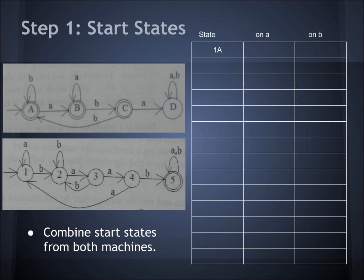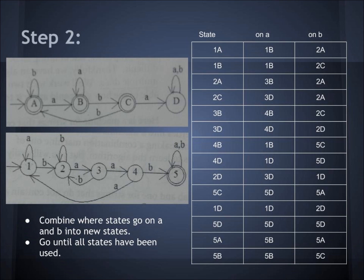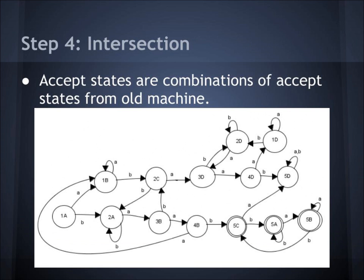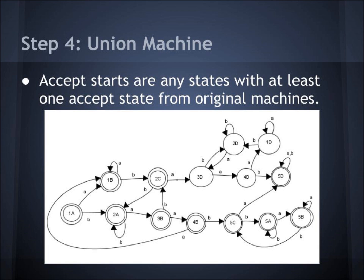Step 1: you make the start state — from these two machines it would be 1A. Step 2: you combine where the states go on A and B into new states, going until all states have been used. From 1 on an A you go to 1, and A on an A you go to B, creating a new state called 1B. From 1A on a B, from 1 you go to 2 and from A you go to A, creating a new state 2A. You do this process until you have all states, then draw the DFA without accept states. For an intersection machine, the accept states are combinations of accept states from the old machines: 5A, 5B, and 5C. For a union machine, the accept states are any state with at least one accept state from the original machine: 1A, 1B, 2A, 2C, 3B, 4B, 5A, B, C, and D.